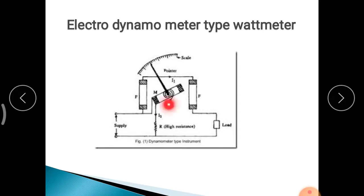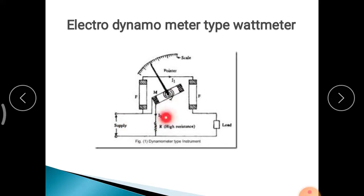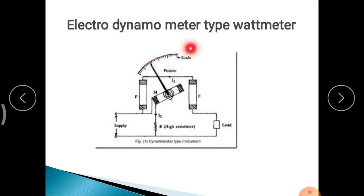The moving coil is placed in between the two fixed coils and is connected across the supply, carrying current I2. Resistance R is connected in series with it to limit the current. It also consists of a pointer connected on the spindle of the moving coil, with springs providing the controlling action, and a scale.